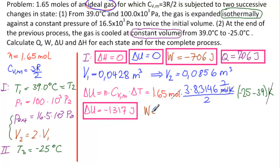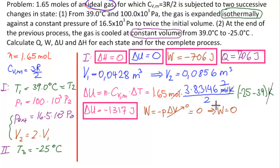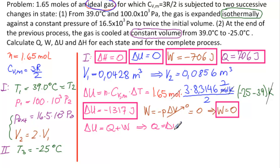For Process 2, W = −P·ΔV, but ΔV = 0 (constant volume), so W = 0. Since ΔU = Q + W, we get Q = ΔU = −1317 J.